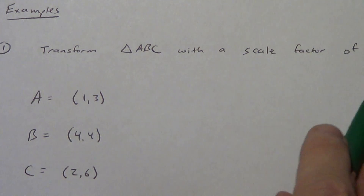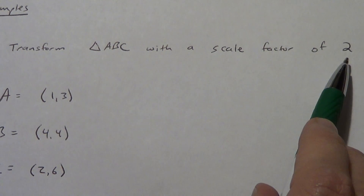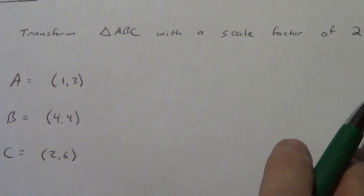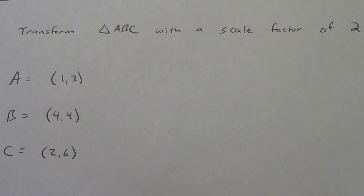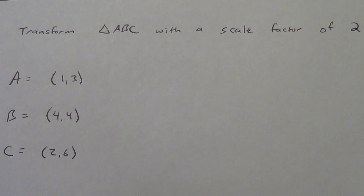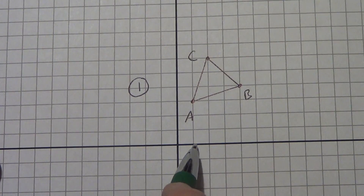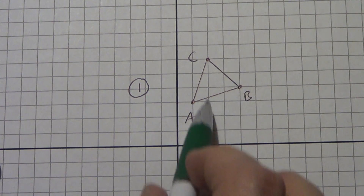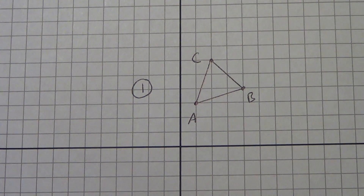We're going to transform triangle ABC with a scale factor of two — so K equals two. These are our three points, so go ahead and pause the video, graph those three points, and draw your triangle. The points are: A at (1, 3), B at (4, 4), and C at (2, 6). If you graph those correctly, you should have A over one and up three, B over four and up four, and C over two and up six.